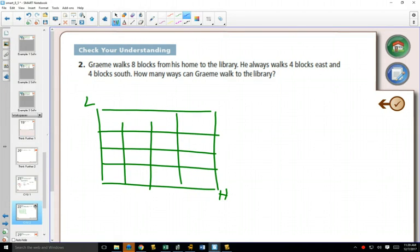Why is it identical? Well, when we're thinking about this, if I wanted to represent one of these routes, so if I took this route as an example, I could represent this route by saying this is east, east, south, south, east, south, south, east, right?